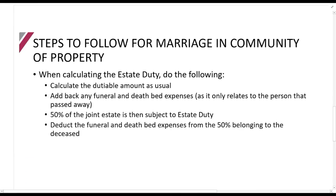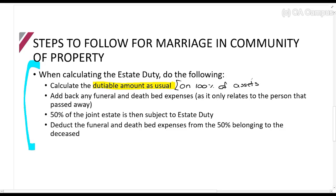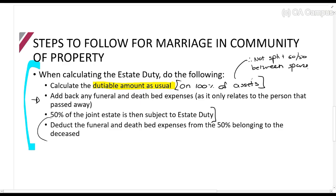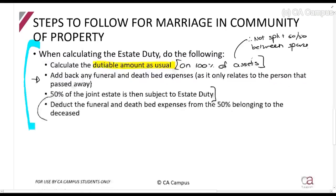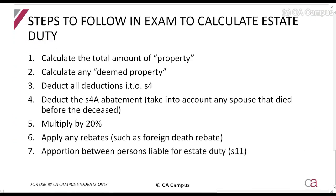The process works as follows: first, calculate the dutiable amount as usual on one hundred percent of assets — that is, do not split fifty-fifty between spouses; treat the person who has passed away as if they own the whole asset. You will then add back any funeral and deathbed expenses, because those are only allowed as a deduction for the person who has passed away. That answer times fifty percent gives you the joint value of the estate — the share that belongs to the deceased. You then deduct deathbed expenses from that and do the rest of the calculation.